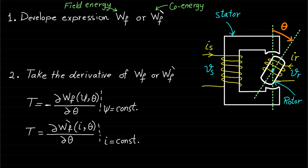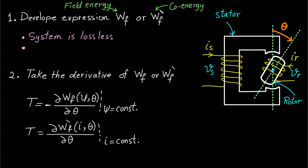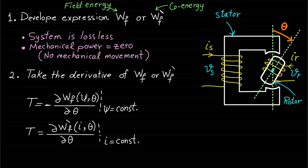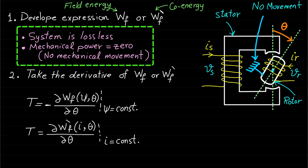To derive the field energy, we need to use the following two assumptions. First, assume that the system is lossless. Second, assume that the mechanical power is equal to zero — that means there is no movement. In other words, the moving part is held fixed and prevented from movement.